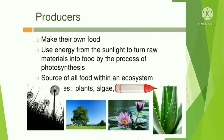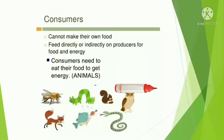Producers can produce or make their own food. They use energy from sunlight to turn raw materials into food by the process of photosynthesis. So who are the producers? Yes, they are plants.